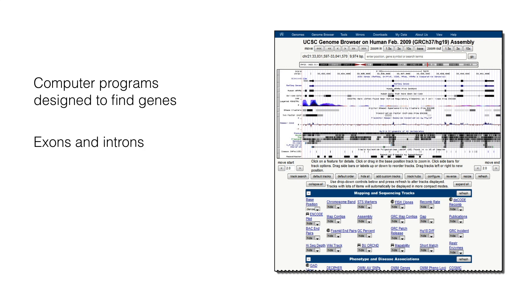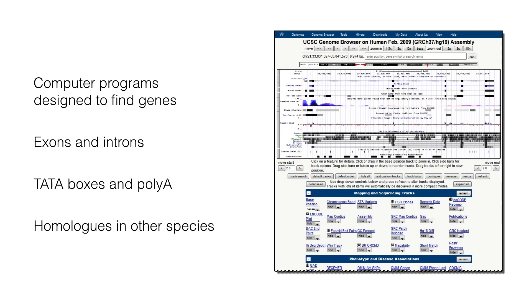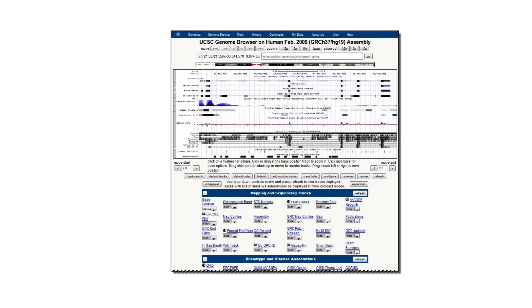These programs use sequences of exons and introns, regulatory sequences such as TATA boxes, or find poly-A addition sites and repetitive elements. Once genes are identified, other programs can search for their homologues in other species. The following lecture describes how these annotation programs work.